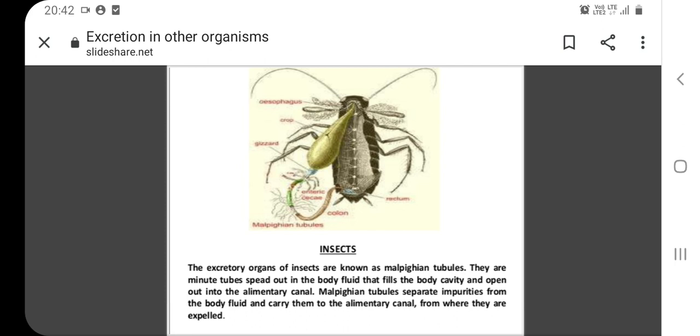Urine is produced by tubular secretion mechanism by the cells lining the malpighian tubules that are bathed in the hemolymph. The metabolic waste like uric acid freely diffuses into the tubules.